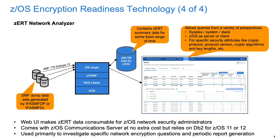The third phase of ZERT is the ZERT Network Analyzer. It is a ZOSMF plugin that ingests ZERT Summary subtype 12 records from SMF dump datasets and stores the data in a DB2 for ZOS database. Users can then query the data to answer questions about their ZOS network protection. This plugin can be easily made available to your ZOS network security administrators, with user access controlled through a new SAF resource. Every PTF shipped for ZERT Network Analyzer is a full replacement, so you can just apply the latest PTF.